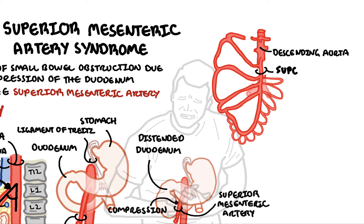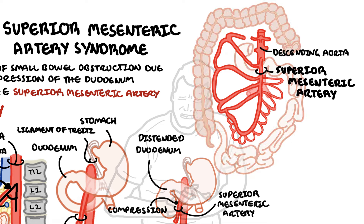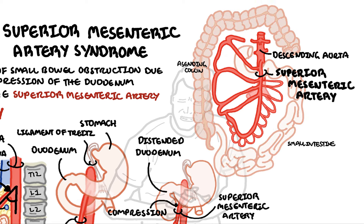The superior mesenteric artery supplies blood to the small intestine, the ascending colon, and the majority of the transverse colon. Embryologically, these structures are called the mid-gut.